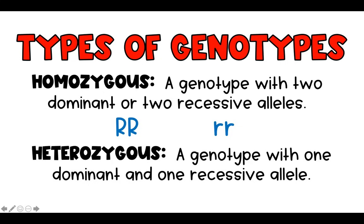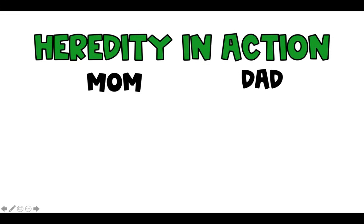Then we have heterozygous — a genotype with one dominant and one recessive allele. For example, a dominant trait for brown hair and a recessive trait for blonde hair. When someone says heterozygous, we automatically know there's one dominant and one recessive, because they're different — every single time.